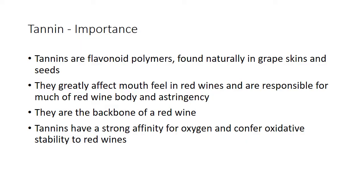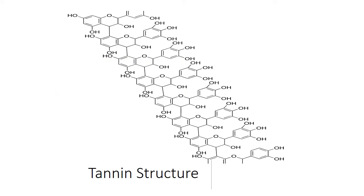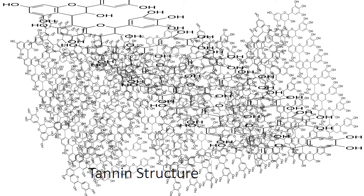Let's go through the basic core phenolics — there are thousands of them, but we'll do the easy ones to measure and understand. Tannins are flavonoid polymers found naturally in grape skins and seeds. They greatly affect mouthfeel in red wines and are responsible for much of red wine body and astringency — they are the backbone of a red wine. Tannins have a strong affinity for oxygen and confer oxidative stability. In reality, tannins are just a big old mess of thousands of different compounds stacked and smashed together, with aldehydes and sugars bridging everything.